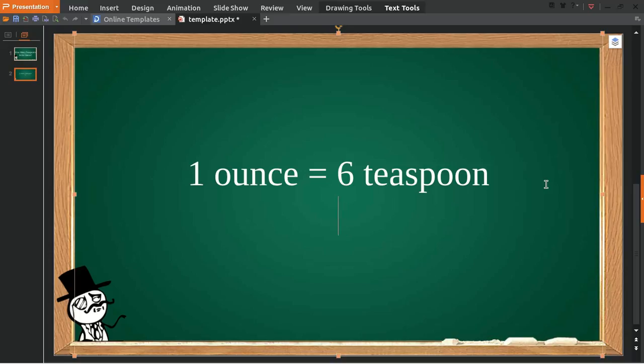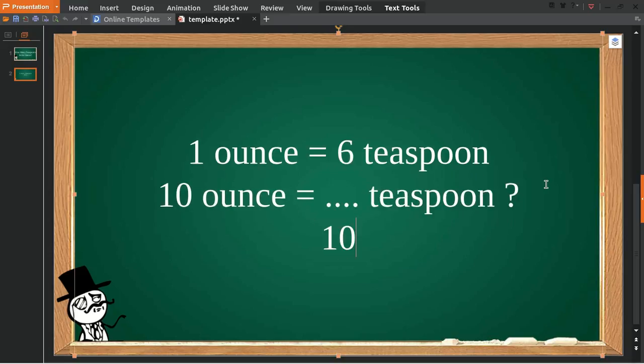In case you want to know how to count ounce into teaspoon, for example, you want to know how many teaspoons you have in 10 ounces. That's an example equation. To solve the problem, you need to firstly multiply 10 with one ounce.